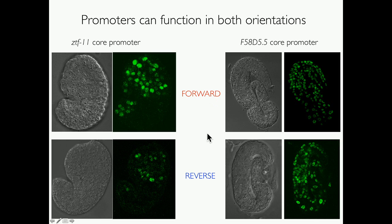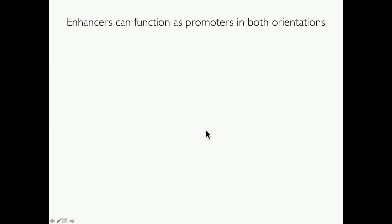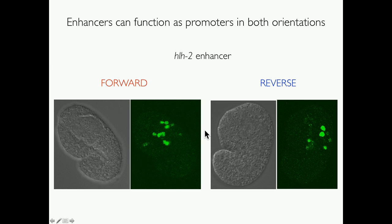We also tested some enhancers. First, we tested one of the HLH2 enhancers upstream of the gene of interest. We saw that it can work in both orientations: in the forward orientation it shows a subset of the full pattern, and in the reverse orientation it shows a subset of that subset.